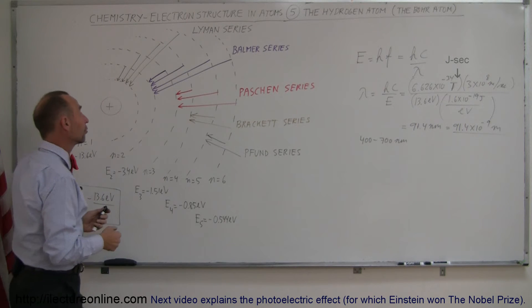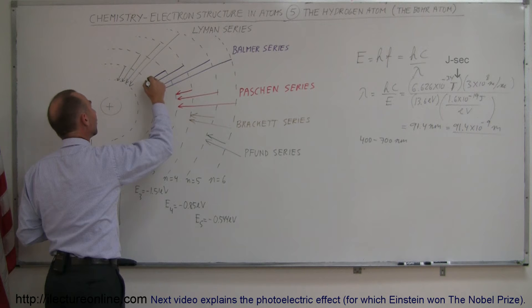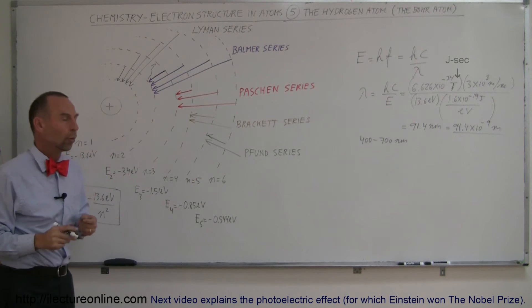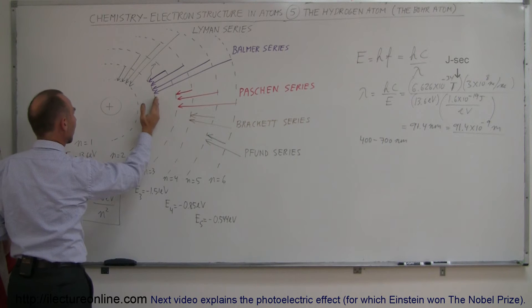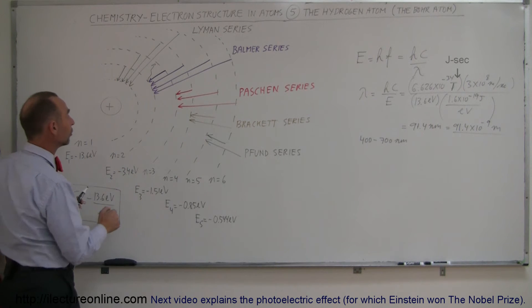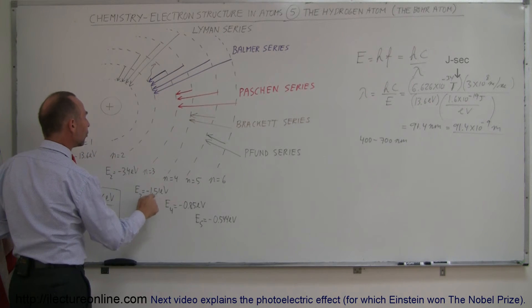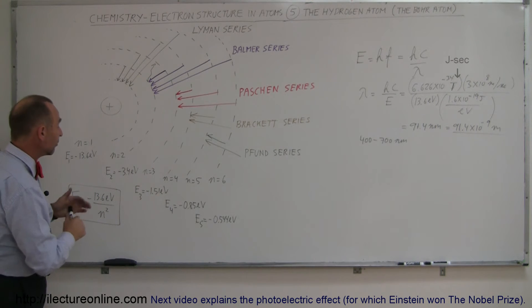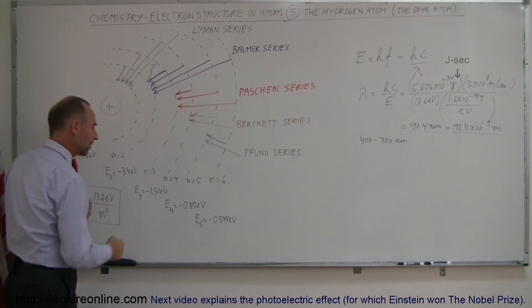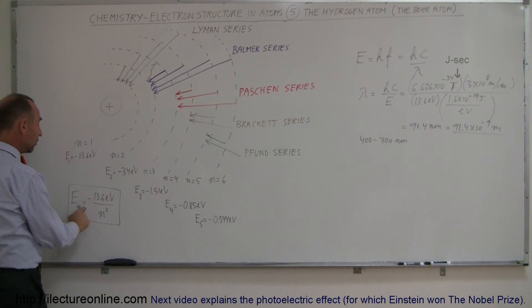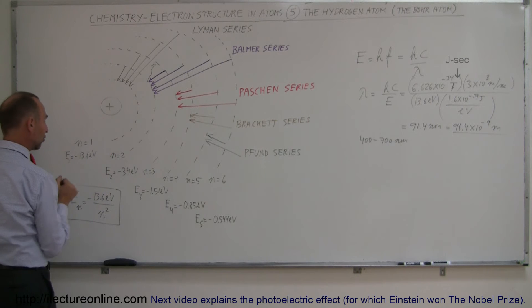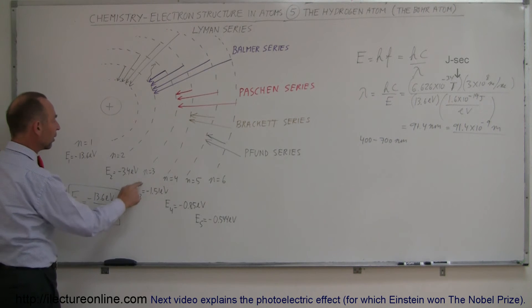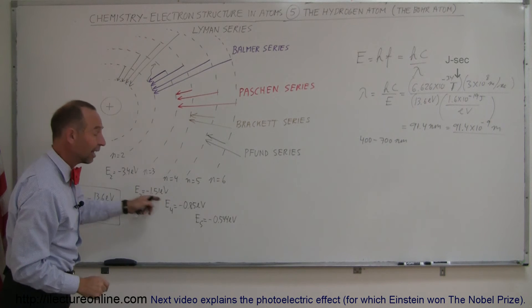Now let's figure out what kind of photon would be emitted when an electron jumps from the n=3 level down to the n=2 level in a hydrogen atom. The energy of any level in a hydrogen atom is minus 13.6 electron volts divided by n squared. So the second level is minus 13.6 divided by 2 squared, giving minus 3.4 electron volts. The third level is minus 13.6 divided by 3 squared, giving minus 1.511 electron volts.